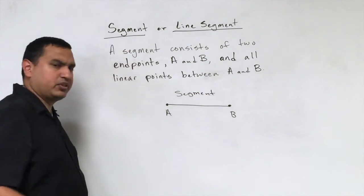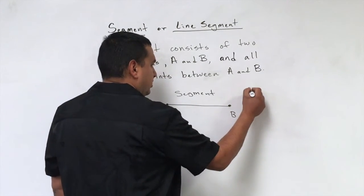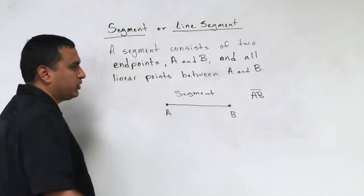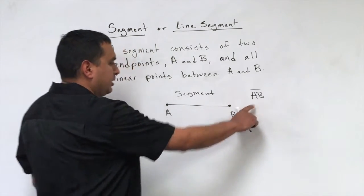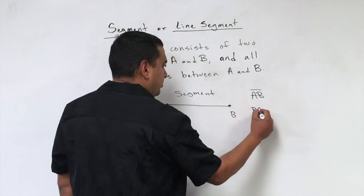Now, to name it or to write it, you would say, you put the two letters together, and you put a bar on top. So this would be a way of saying segment AB. You could also flip the two letters and call it segment BA. Both of those mean the same thing.